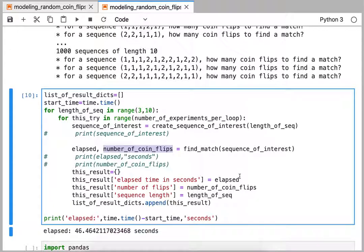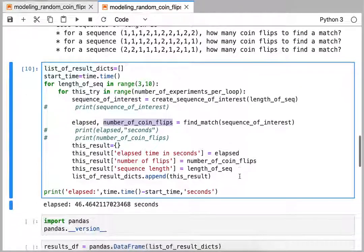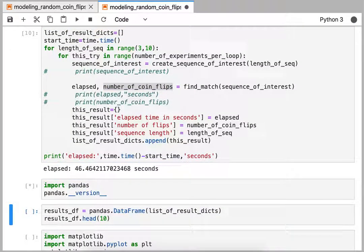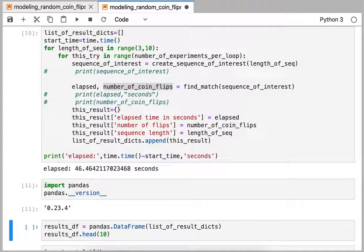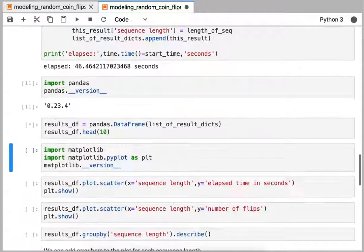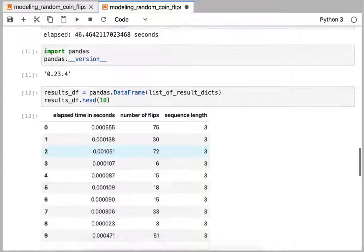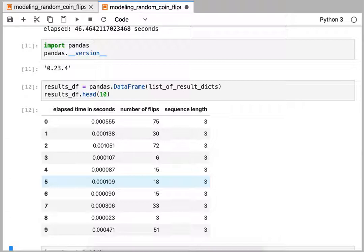Okay, so that cell took about 46 seconds to execute. Now let's visualize what that looks like. When I convert the list of dictionaries into a pandas data frame, it looks like the experimental outcome. So basically, we have this is a running index of which experiment we're in.